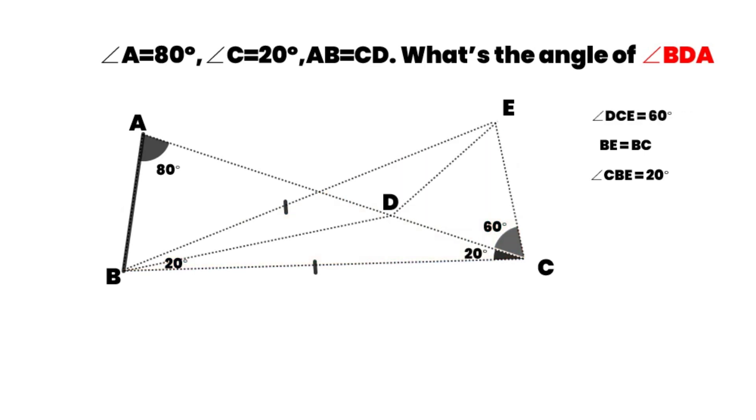Segment AB is equal to EC. So EC is equal to CD. The triangle ECD is an isosceles triangle. It has an angle of 60 degrees. The triangle ECD is equilateral. So ED is equal to CD.